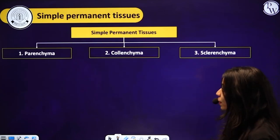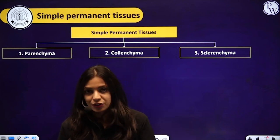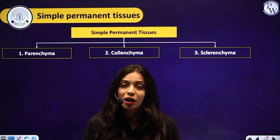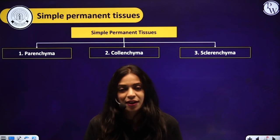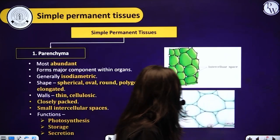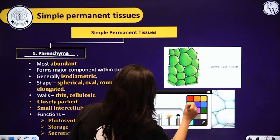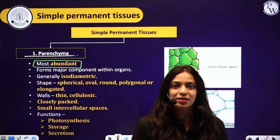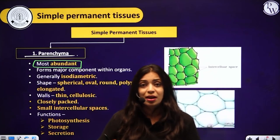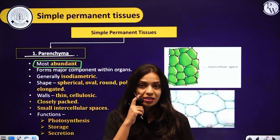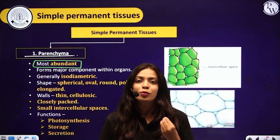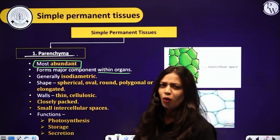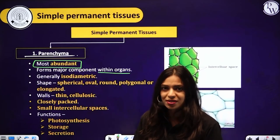Simple permanent tissues are of three types: parenchyma, colenchyma, and sclerenchyma. Parenchyma is the most abundant type of plant tissue — it is present in every plant part like the root, stem, leaves, flowers, and fruits. It forms a major component within all organs. Generally, these cells are isodiametric, meaning the diameter of these cells is nearly the same. The shape is variable — sometimes spherical, oval, round, polygonal, or elongated.